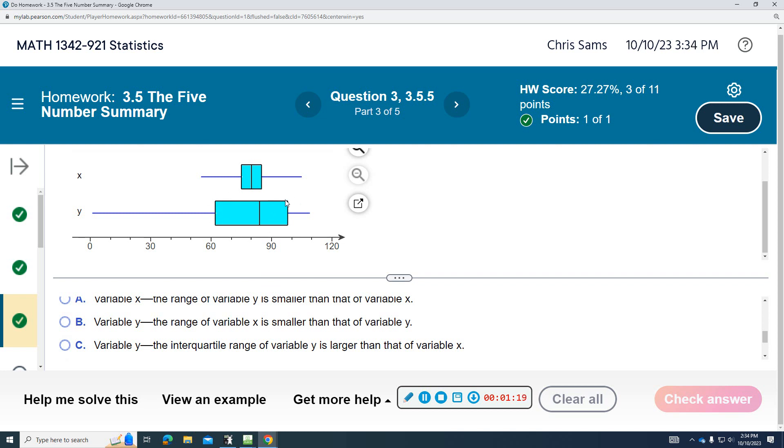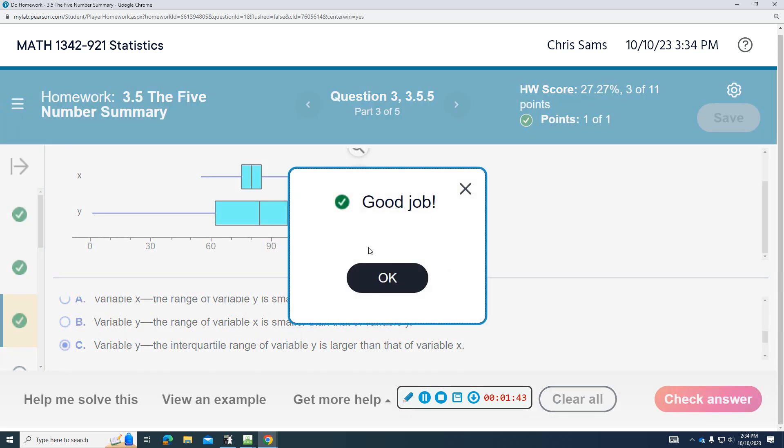It's telling you how spread out these numbers are. The range just tells you the largest and smallest. So you could have two distributions that have the same smallest and largest value, but the spread between them is much different. And so just the range itself doesn't really help you with the spread. But the interquartile range is going to be much better. So you want to go with that one.